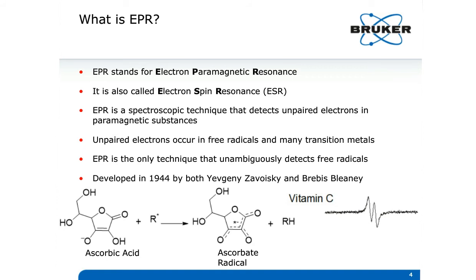EPR was first observed in 1944 by Evgeny Zavoisky at Kazan State University and also by Brebis Bleaney at the University of Oxford, independently of each other. At the bottom of the slide, we see a free radical that you may be familiar with — vitamin C — accompanied by its EPR spectrum.